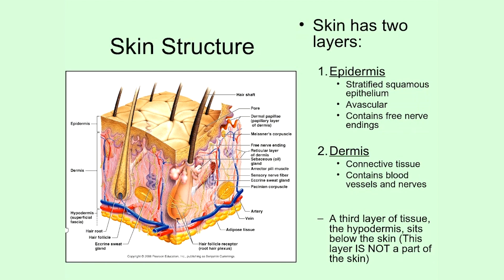The first thing you should know about skin is it has two layers. You can see these layers labeled over here on this diagram. The first one is known as the epidermis — the upper layer. It has a jagged boundary between the epidermis and what's below it, the dermis, which increases the surface area between the two layers and helps to bind them together.